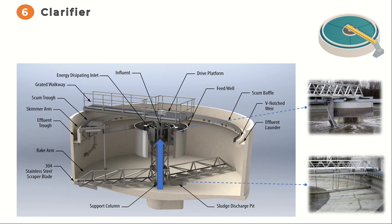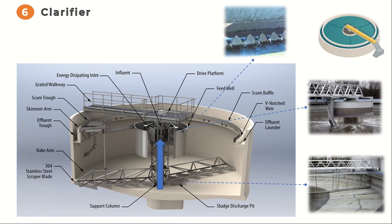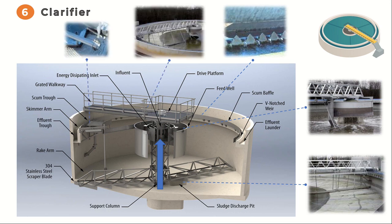To ensure the clarified water exits the clarifier without any solids, effluent weirs are positioned near the top. These weirs allow the clarified water to overflow and be directed out of the clarifier while preventing settled solids from being carried over into the effluent stream. The skimmer, located on the surface of the secondary clarifier, is equipped with a dry platform that moves along the length of the clarifier, collecting floating materials and scum.